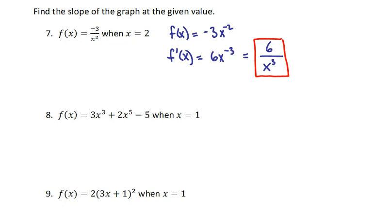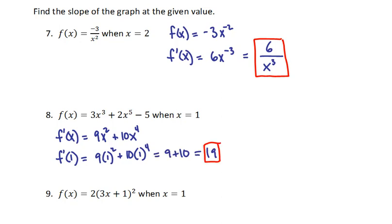For problem 8, we want to find the derivative and evaluate at x = 1. Since everything is already simplified, we can find the derivative: 9x² + 10x⁴, since the derivative of -5 is 0. Evaluating at x = 1 gives us 9 + 10, which is 19, and that's our final answer.